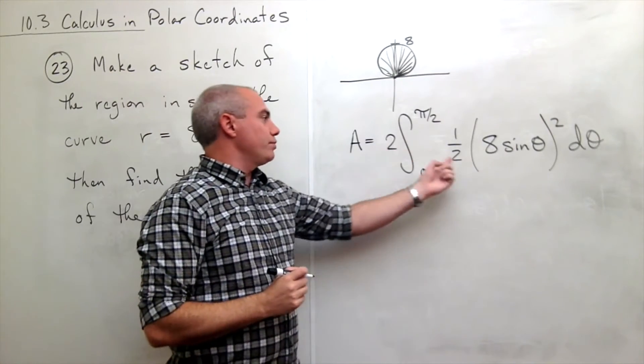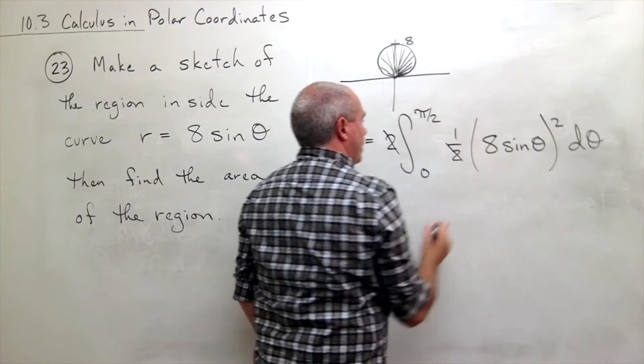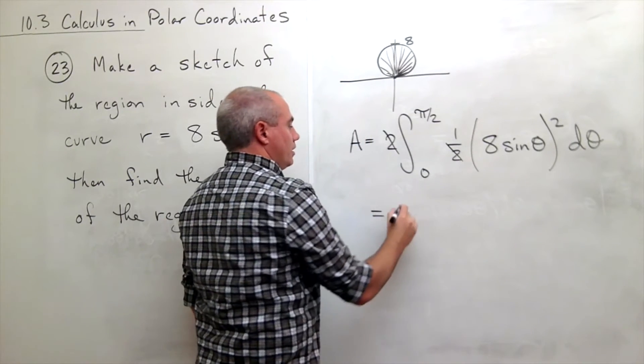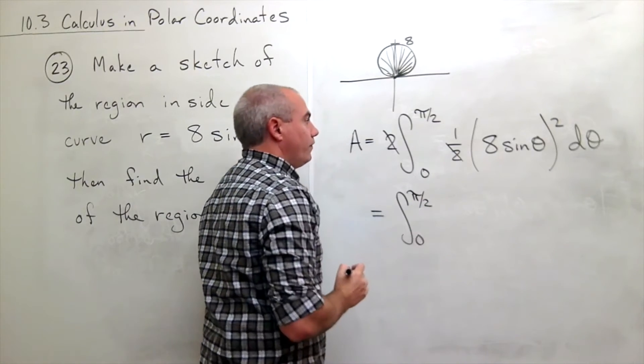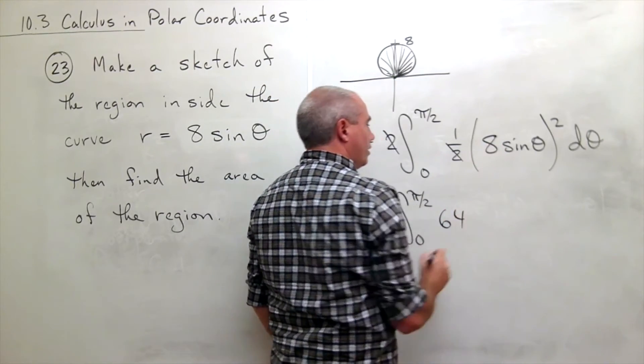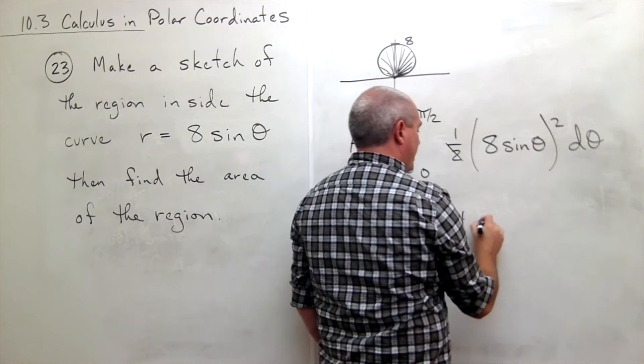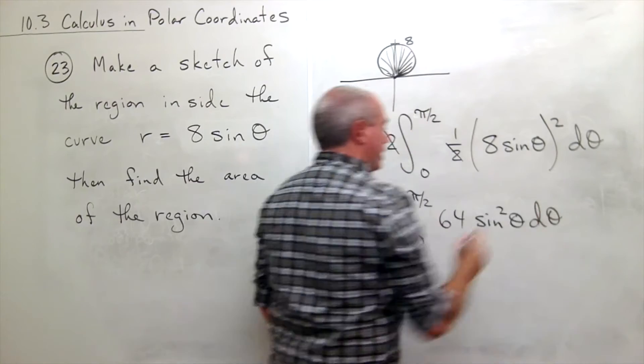So right off the bat we have a 2, we have a 1 half. Those cancel and I'm left with integral from 0 to pi over 2 of, if I square the 8 I get a 64, and if I square the sine of theta I get sine squared theta d theta.